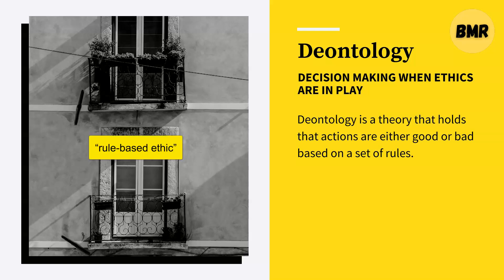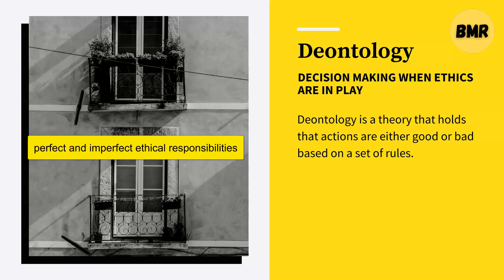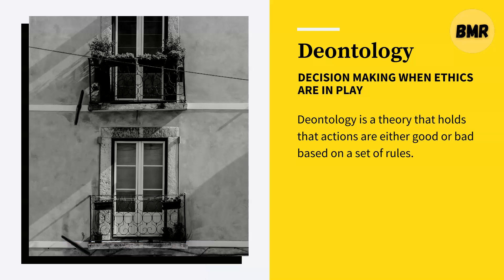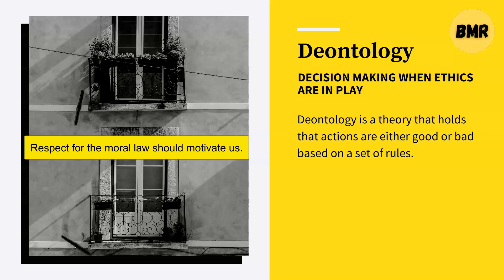Deontology isn't limited to Kant's ethics — any system based on rules is a sort of deontology, hence the term rule-based ethics. Most deontologists distinguish between perfect and imperfect ethical responsibilities. A perfect responsibility is rigid: 'never kill innocent people' is a perfect duty with no middle ground. Imperfect obligations allow for some compromise. Our motivation, which Kant called a maxim, is equally vital: we should fulfill our responsibility just because it is right, not for self-interest, better outcomes, or happiness.